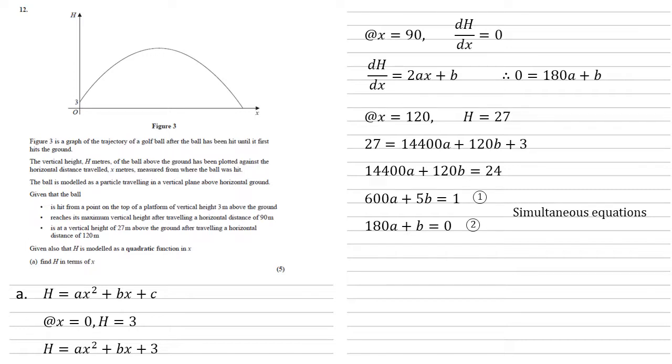We can see that if we multiply the second one by 5, both equations will have 5b in them, so if we subtract, we'll cancel out the b's. So we're going to do the top one minus 5 at the bottom one, so 600 minus 5 lots of 180, that gives us minus 300a, and that's equal to 1, 1 minus 5 lots of 0, so a is equal to minus 1 over 300.